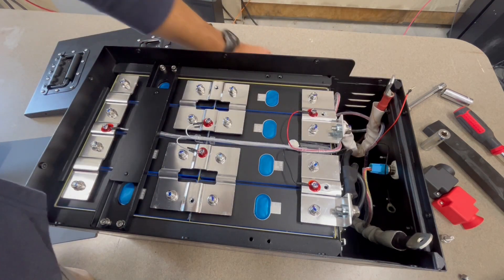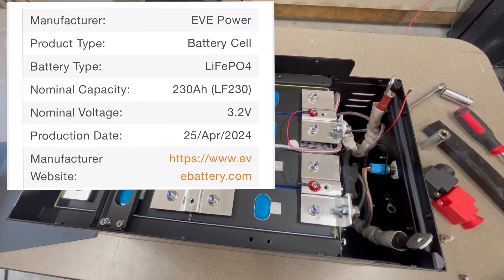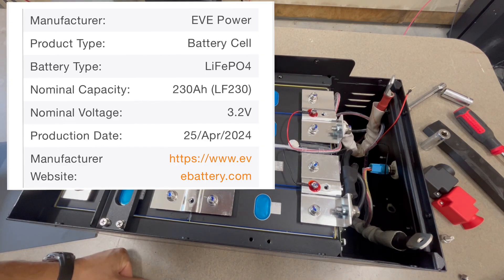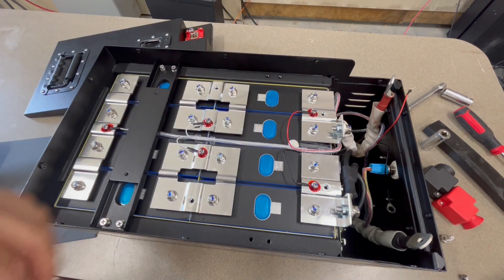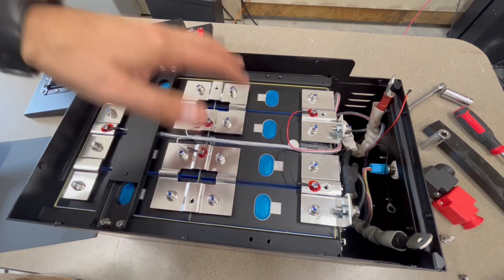They've got a foam protector there over those supports that cross the cells, and they do not block the vents which is good. These are actually Eve cells. I can put that on the screen. I checked the serial numbers on a few of them just to verify they were all from the same batch and they were. I really like Eve cells.